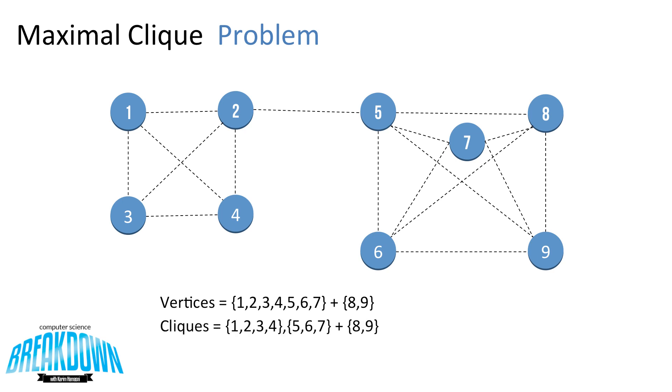It wouldn't. In fact, the cliques in this case, we would first look for the cliques from 1 to 7, and we'd find that the cliques would be 1, 2, 3, and 4, and then another subset, which is 5, 6, and 7. And then we'd tack on the subset 8 and 9.